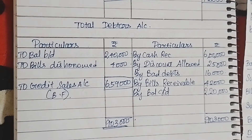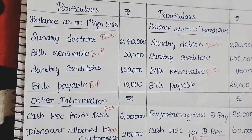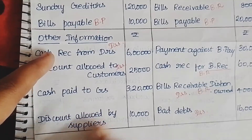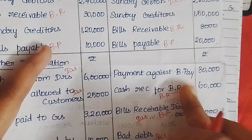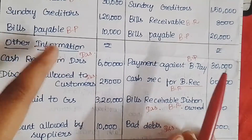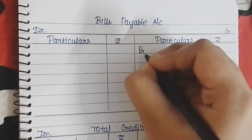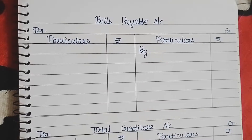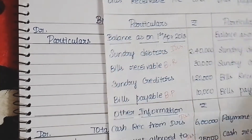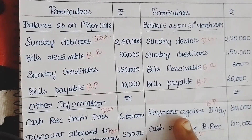Shall we start? Now, bills payable related information: opening bills payable — and this one is closing bills payable. Next, cash paid to creditors goes to creditors. Discount allowed by supplier goes to the creditor account. Payment against bills payable goes to bills payable account. So opening bills payable, closing bills payable, and payment against bills payable — three pieces of information. Opening balance of bills payable is 10,000. By balance brought down — 10,000. Payment against bills payable — 30,000. To cash paid account — 30,000.